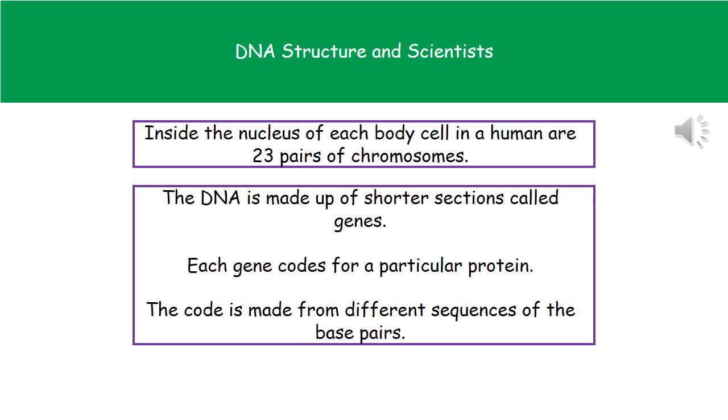When we look at that DNA, we can split it up into shorter sections called genes. These genes code for a particular protein. All of those base pairs we looked at previously - the sequence that they occur in within that gene gives us the code for one particular protein. By changing the sequence of base pairs, we change the code, so we change the protein we make.